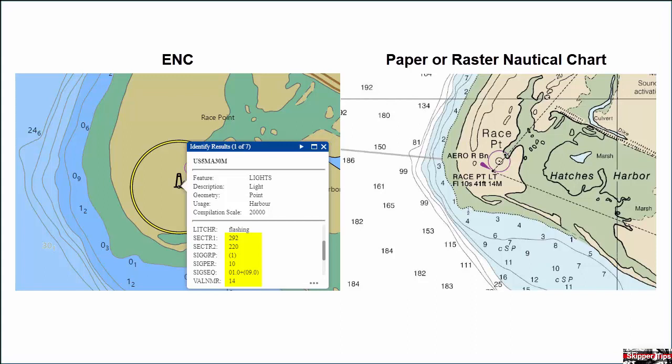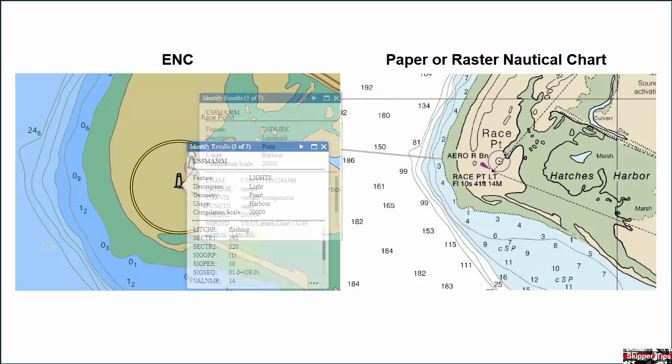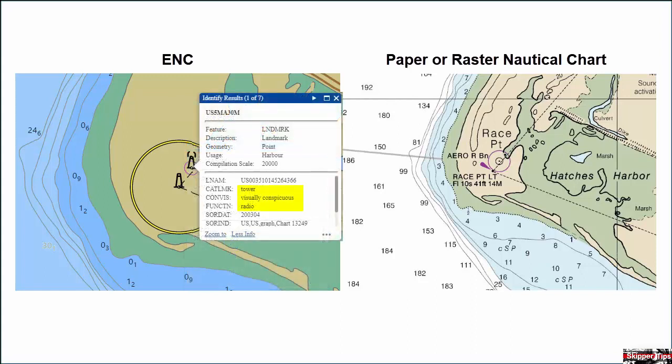The light can be seen from 14 nautical miles on a clear night. Next, we move our cursor over the landmark to the northeast. Our dialog box shows this to be a conspicuous radio tower.